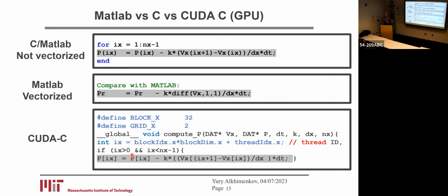Why is this possible? Because it is a local operation in space — we can read certain information, write certain information, and update at a particular grid point. All thousands of little CPUs on a GPU can do this operation.